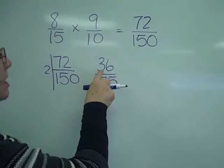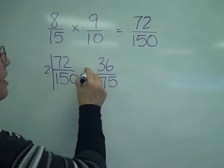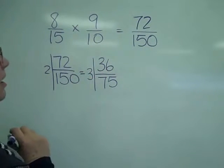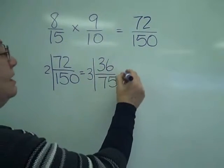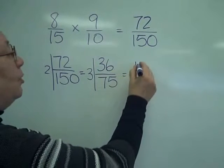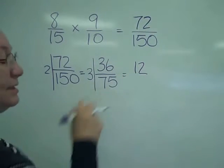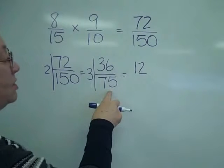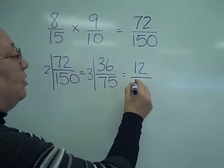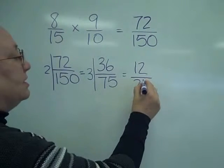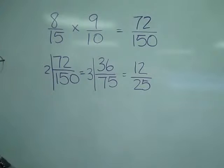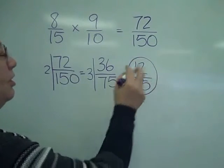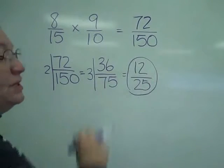Now I know just looking at the digits of 36 that 3 is going to keep working. So 3 into 36 is 12. And 3 into 75 — again, think of money: 3 quarters is 75. So 3 goes into 75 twenty-five times. That would be my answer from reducing it.